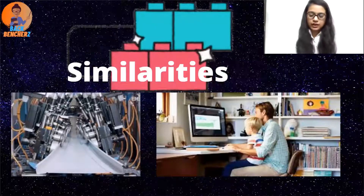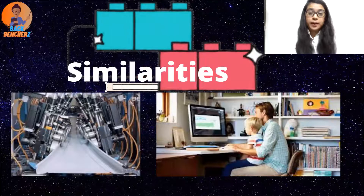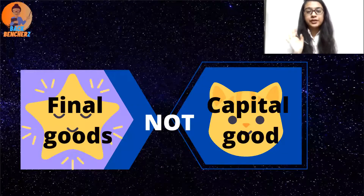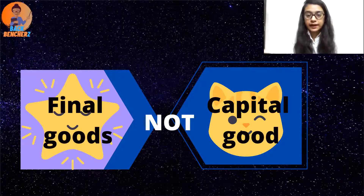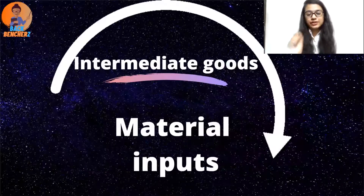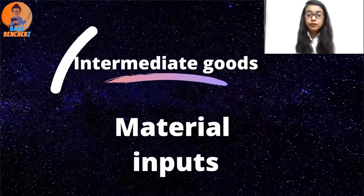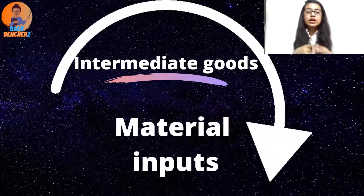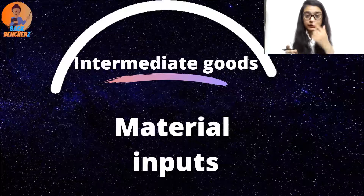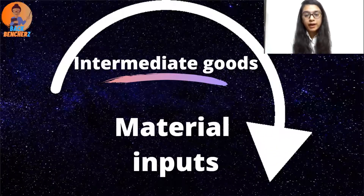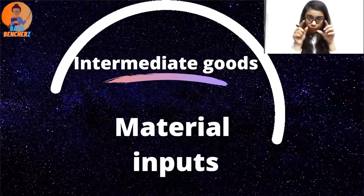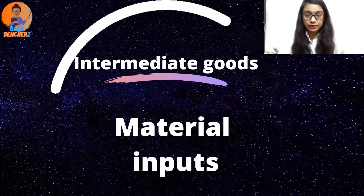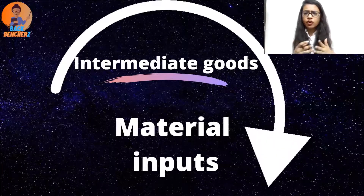But there are some goods which are neither final goods nor capital goods — those are called intermediate goods. These goods have material inputs and serve as raw material in the process of producing any final good. That is what intermediate goods are — they are used in the production process to eventually become a final good.